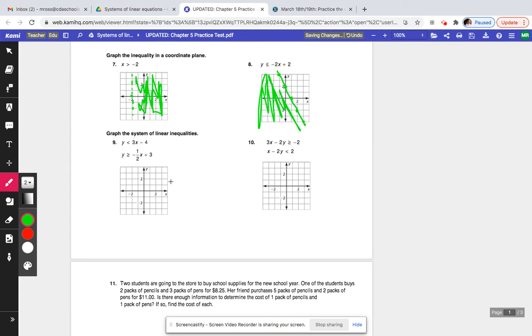Let's do 9. We have two inequalities, systems of linear equations. So let's graph the first equation. y is less than 3x minus 4. So at negative 4, we have a point. And it's positive, so up 3, over 1. Again, up 3 over 1. Can't go anymore. It is less than, so we'll have a dashed line. It's kind of hard to do dashed line, but you get the idea. And then it's less than, so everything below will be shaded.